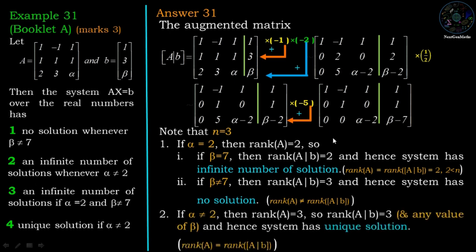Case 2: if alpha not equal to 2, the row echelon form of A has three non-zero rows, so rank of A = 3. The row echelon form of augmented matrix [A|B] also contains three non-zero rows for any value of beta, so rank of [A|B] = 3. Since rank of A = rank of [A|B] = 3 = n, the system has a unique solution.